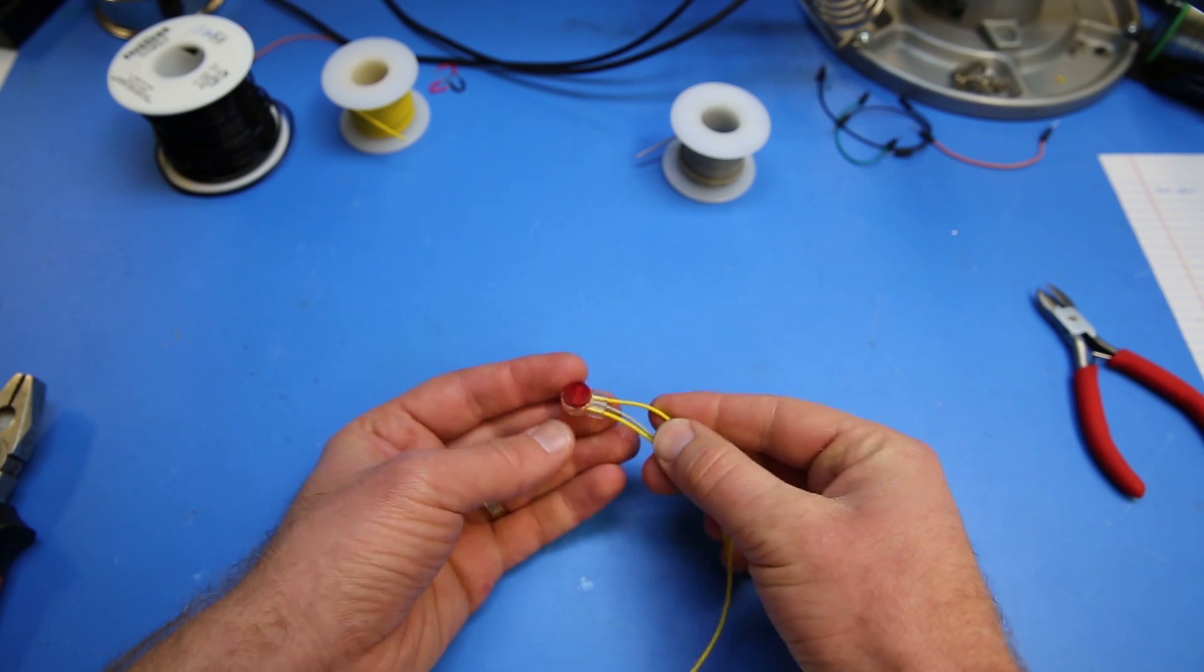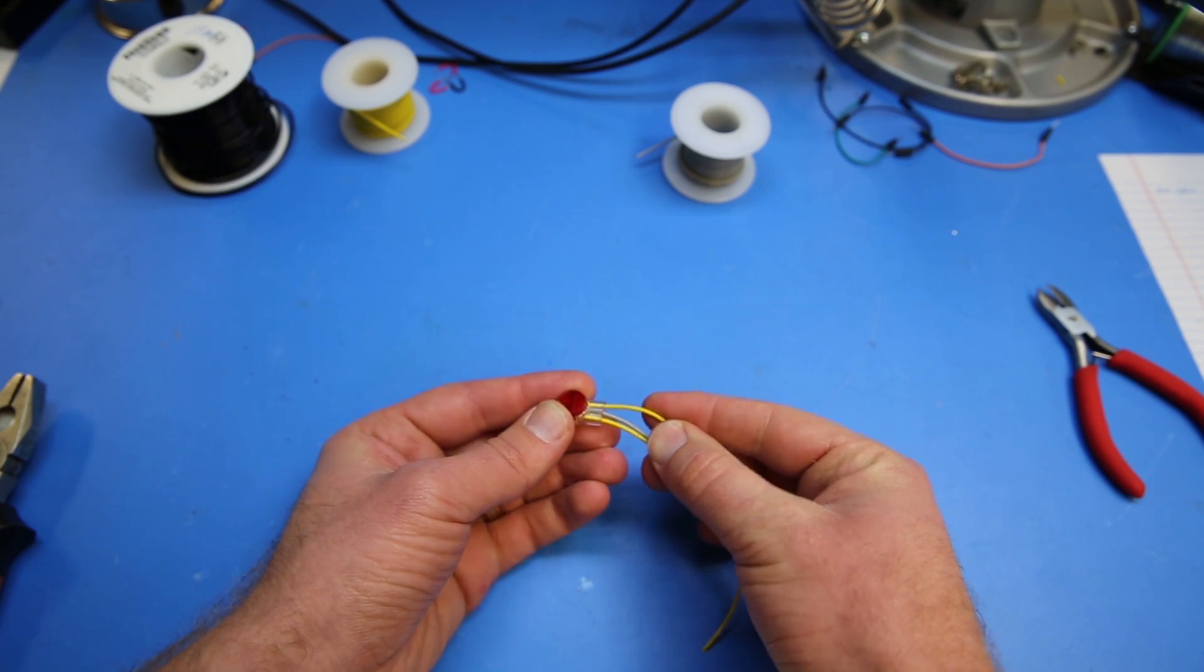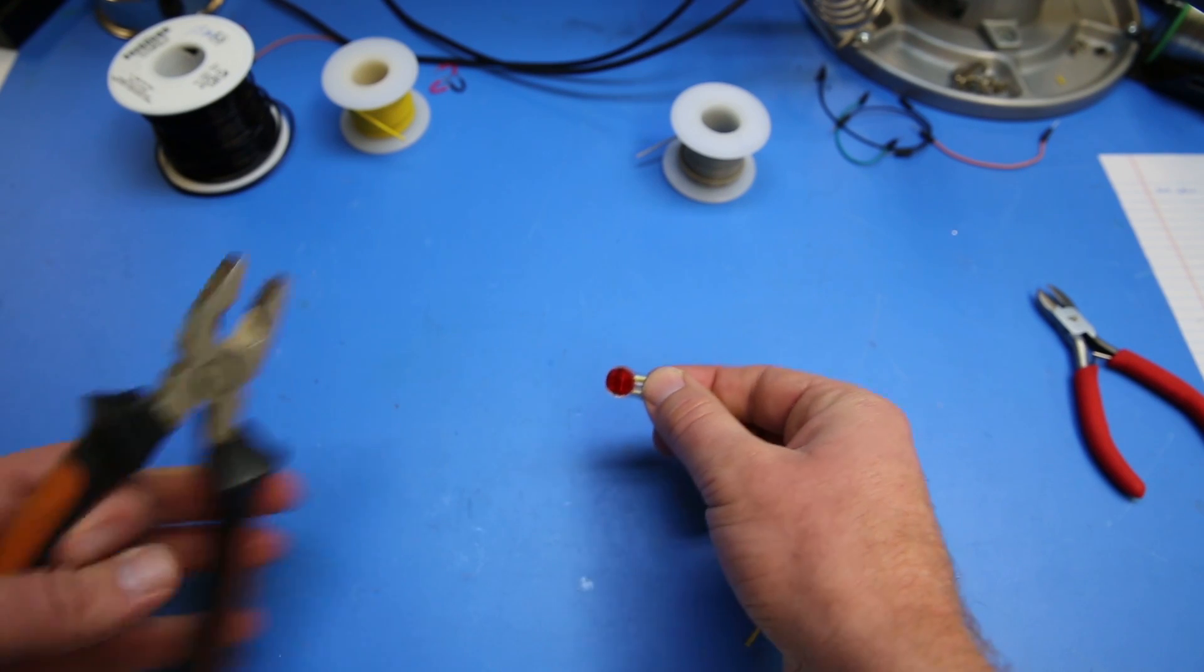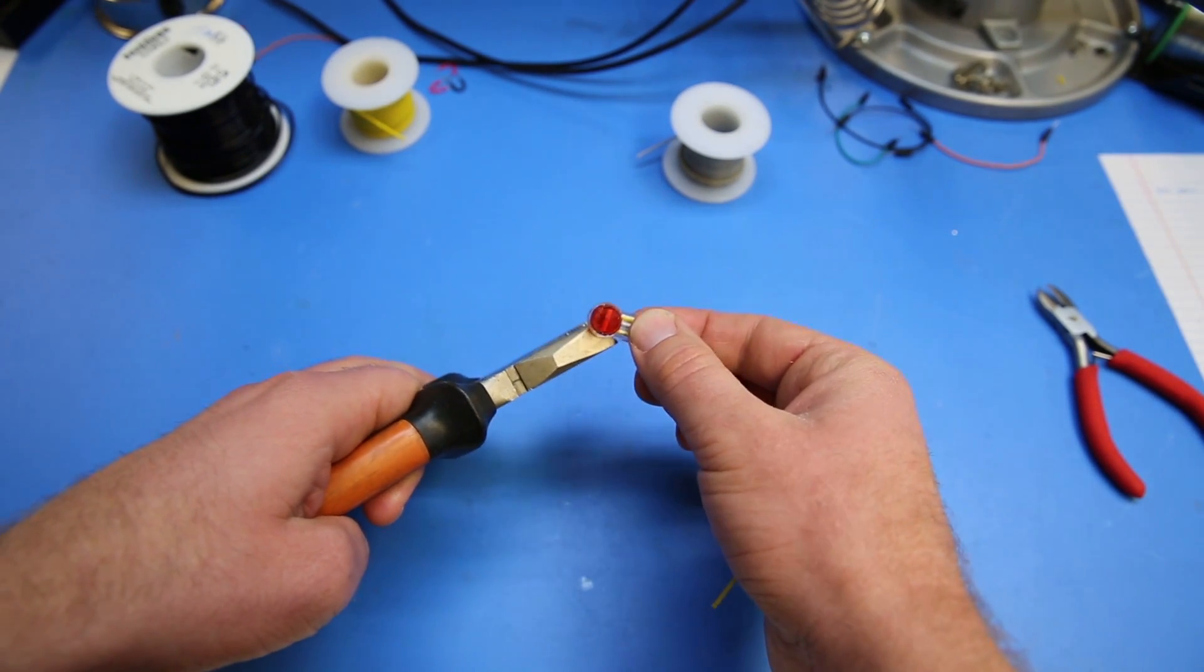The splice is going to connect electrically these wires together. Now you can crimp it by pushing it in with your finger if you're strong enough, or in my case I actually want to use these pliers here.